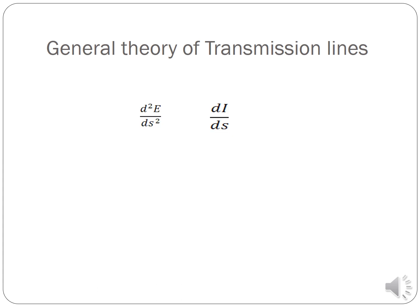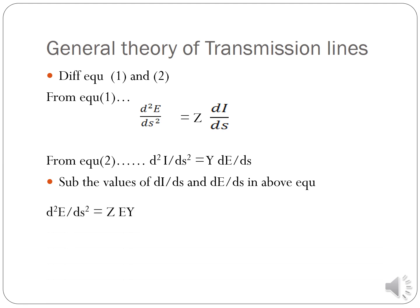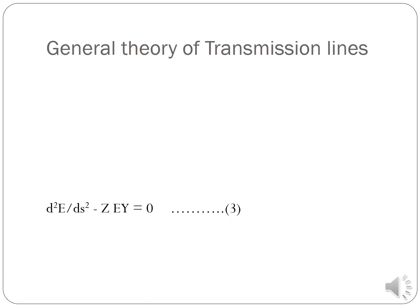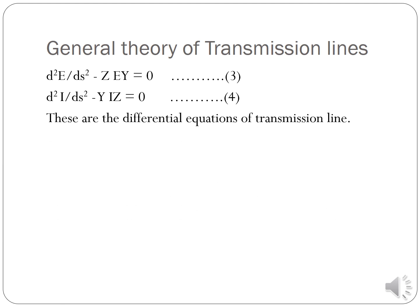Differentiating, we get d²E/dS² = dI/dS · Z, and from the first equation we get d²I/dS² = Y · dE/dS. Substituting, we get d²E/dS² = Z·Y·E and d²I/dS² = Z·Y·I. Therefore, d²E/dS² − Z·Y·E = 0, which is a second-order partial differential equation.